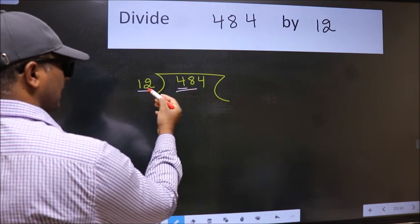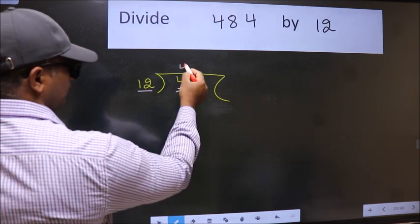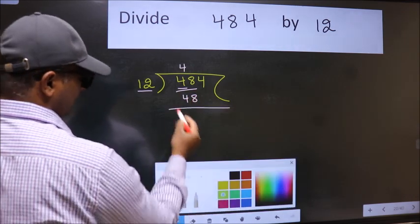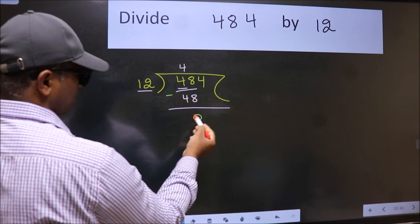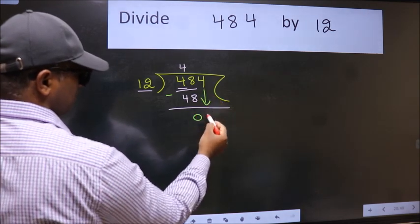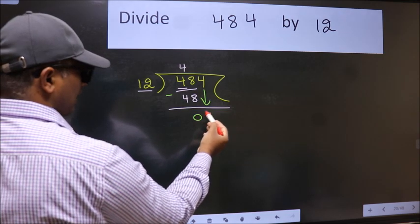When do we get 48 in 12 table? 12 fours, 48. Now we should subtract. We get 0. After this, bring down the beside number. So 4 down.